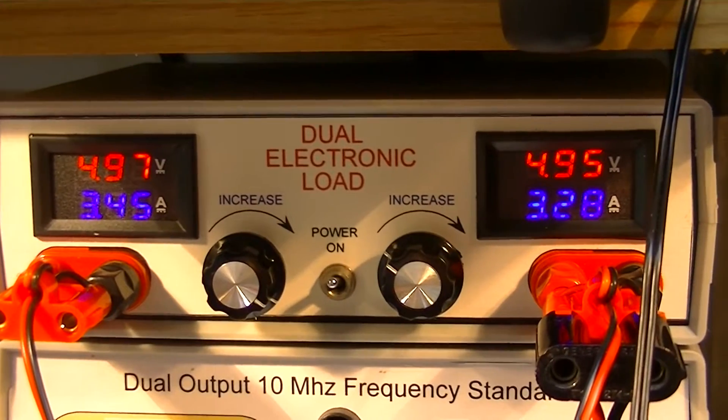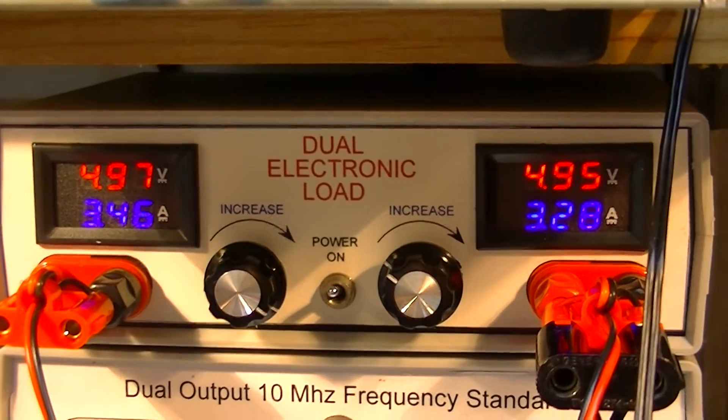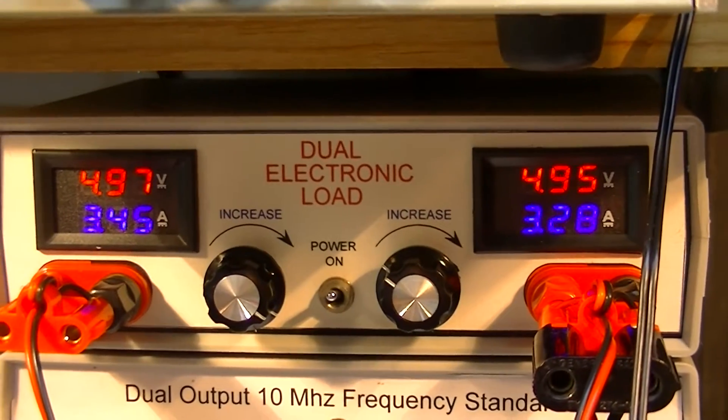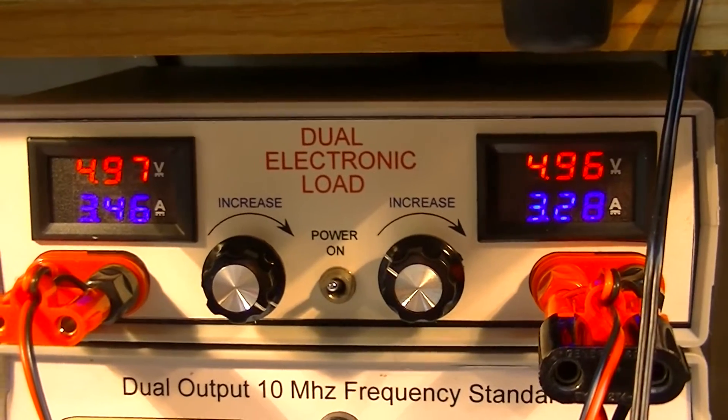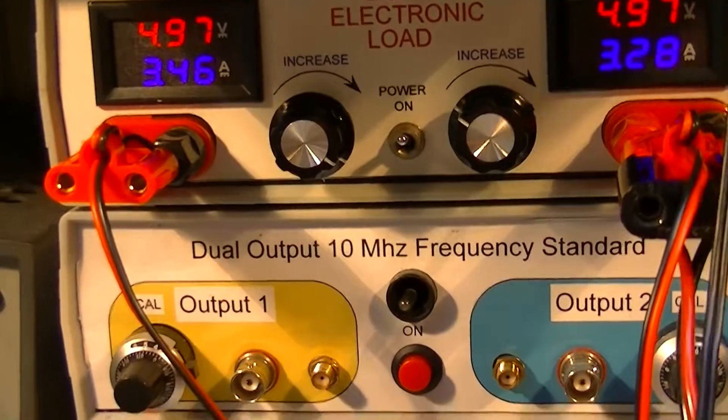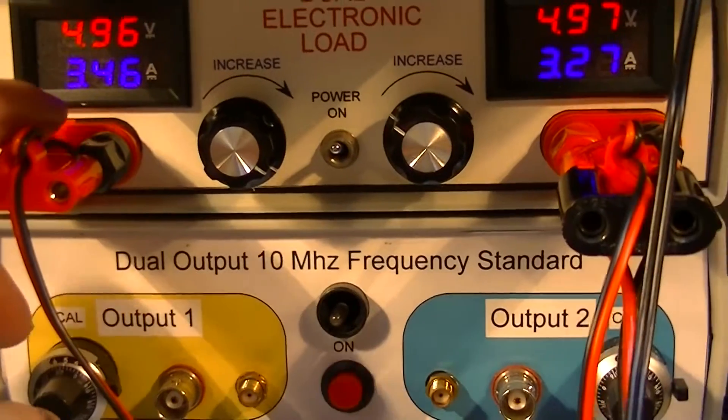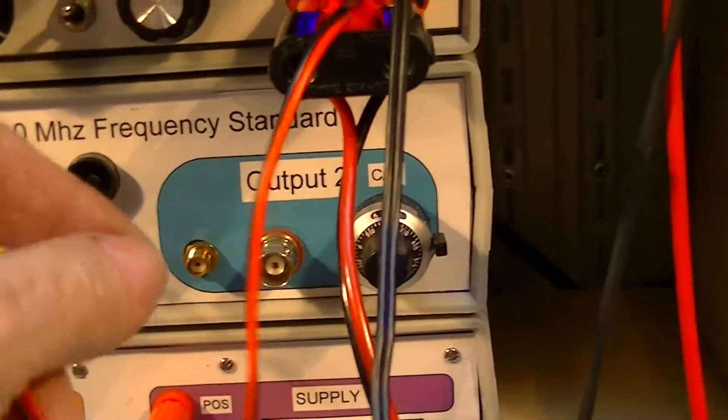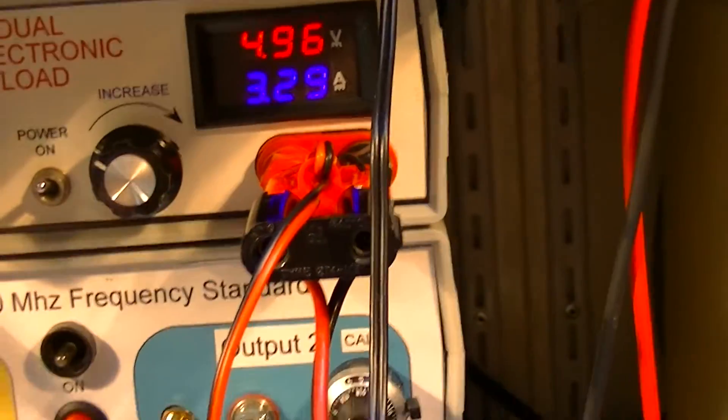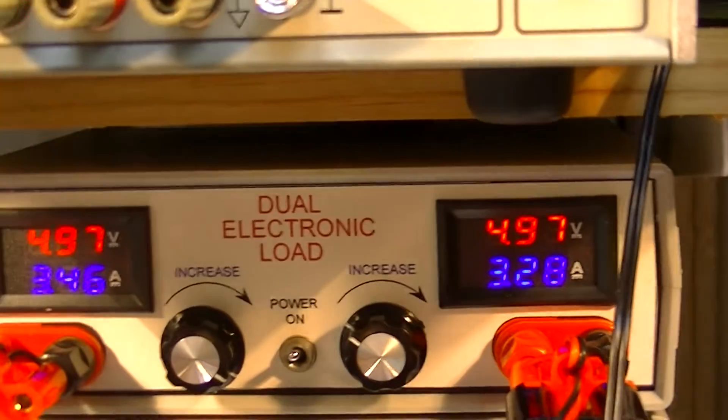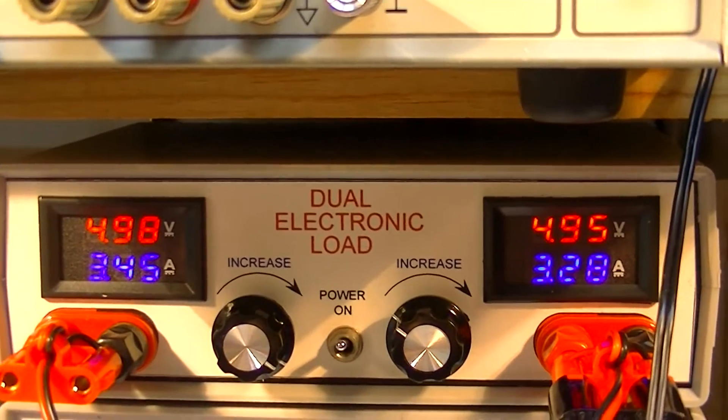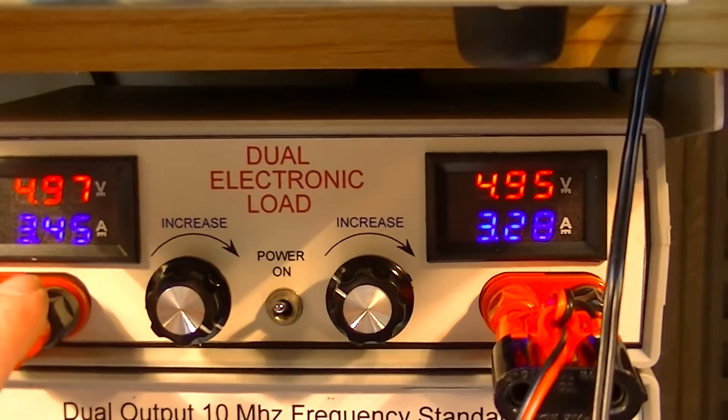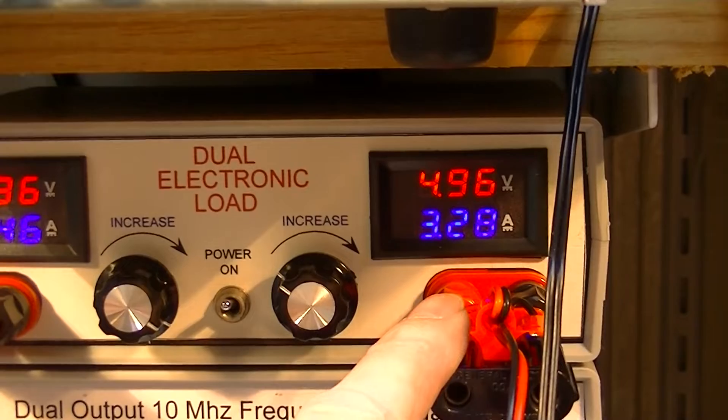This is the little dual electronic load I did a couple videos ago. The inputs are connected in parallel here. Notice that both of them are reading almost 5 volts and almost 3.5 here and 3.28 here.